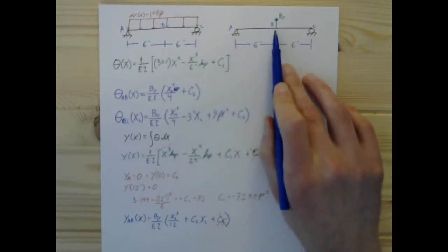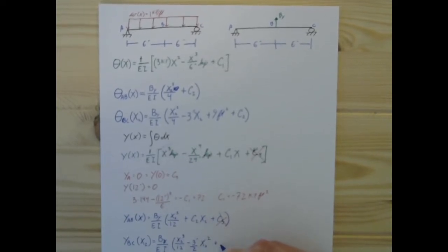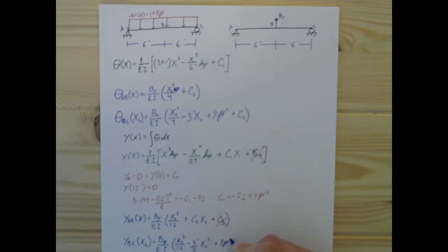But, this only goes to b, we don't know what the deflection is at b, so we can't find C2 yet. What we can do, though, is start working on the deflection from b to c. That's the function of x2, and that's going to be equal to by over the Young's modulus and the second moment of inertia...